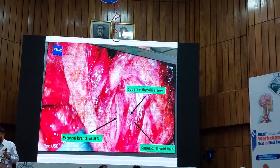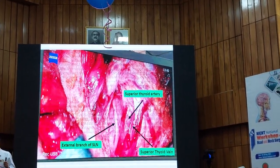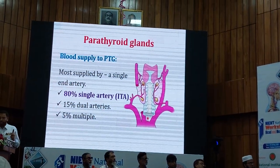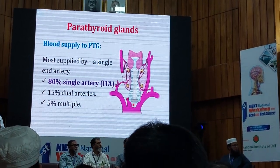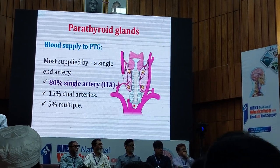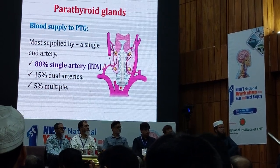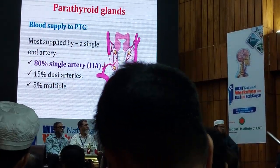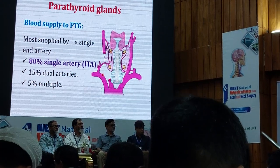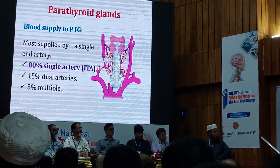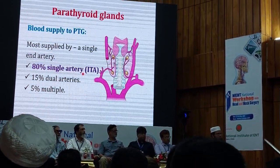This is the external branch of the superior laryngeal nerve, and this is our superior thyroid artery and superior thyroid vein. Now, coming to the parathyroid. The parathyroid gets a single blood supply — that means if you ligate or injure the blood vessel, it becomes devascularized. You should keep in mind that you cannot ligate or injure the blood vessel. If you devascularize it, the parathyroid will not survive. Only 15% have dual blood supply, and only 5% have multiple blood supply. So most of the parathyroid gets only one blood supply — you should pay attention and respect the blood supply of the parathyroid.